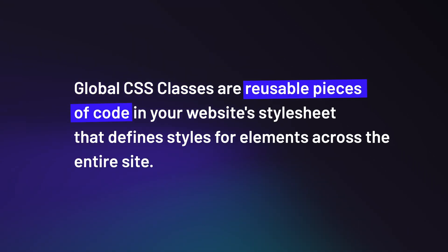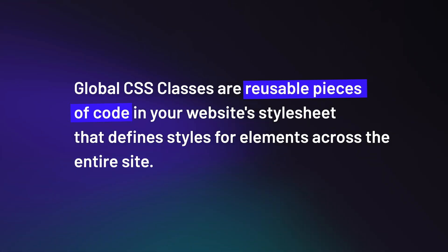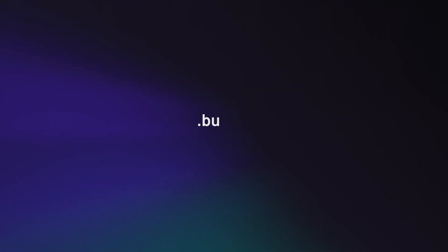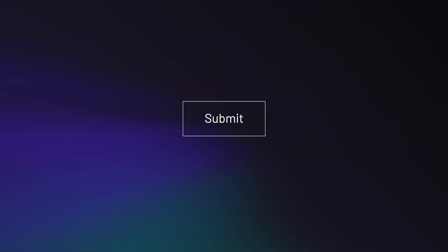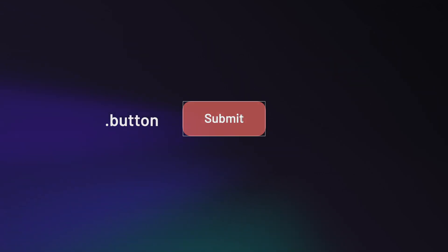So first of all, what are global classes? Global classes are reusable pieces of code in your website's stylesheet that define styles for elements across your entire site. You can think of them as style templates. For example, you create a global class called 'button' and define rules such as the background color, text size, padding, and so on. Then every time you add that button class to a button on your website, it'll automatically look the way you styled it in your CSS.